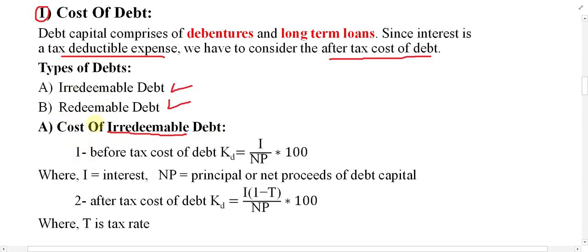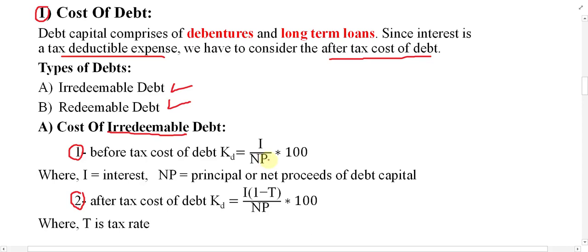Whether it is irredeemable or redeemable, the cost is calculated under two conditions. Condition one: before-tax cost of debt. Condition two: after-tax cost of debt. For before-tax cost of debt, the formula is KD = I / NP × 100. Here, I means interest, and NP means the net proceeds — that is, the amount of money raised from the loan. For example, if you take one lakh loan from the bank, NP is one lakh.